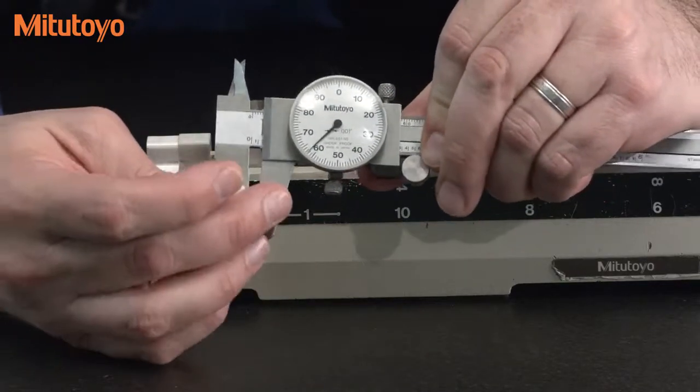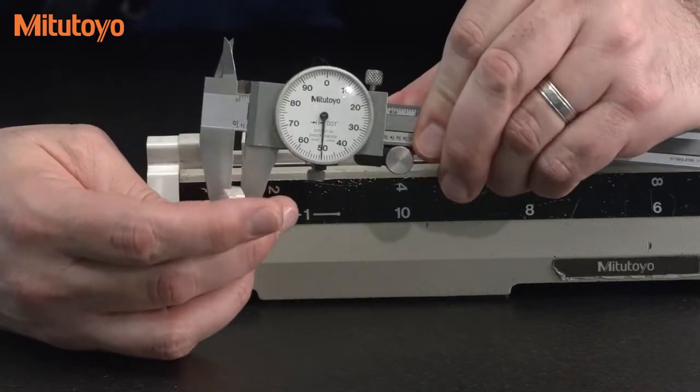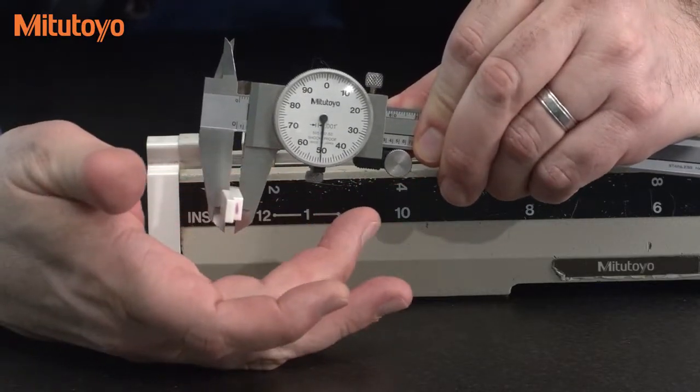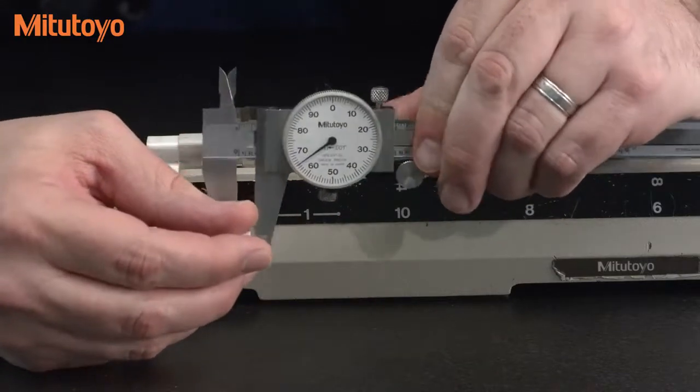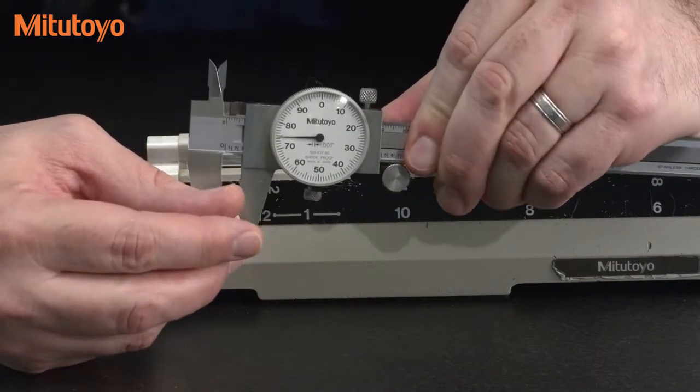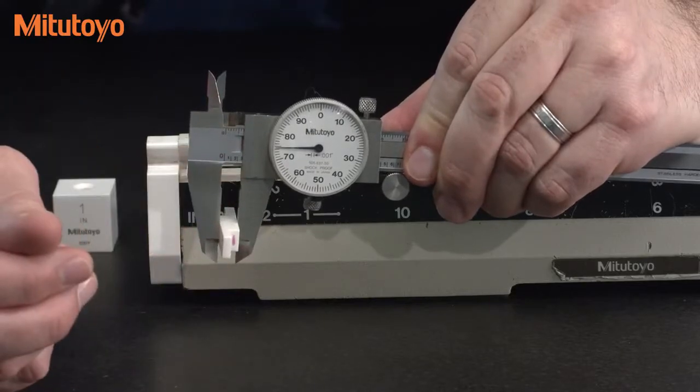If I measure the .150 block, I should be at the 6 o'clock position like you see here. And if I measure both blocks that are wrung together, I should be at the 9 o'clock position.